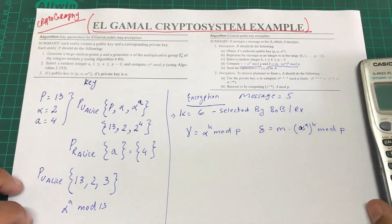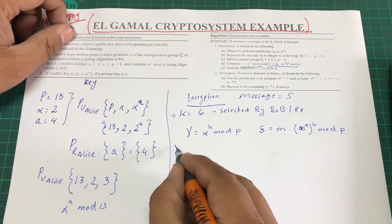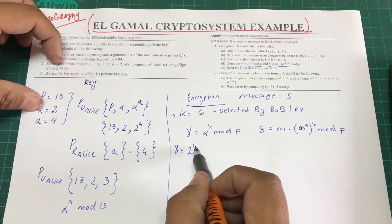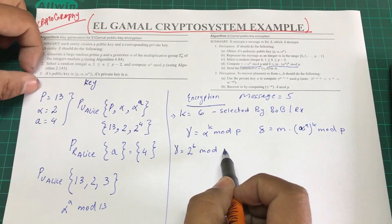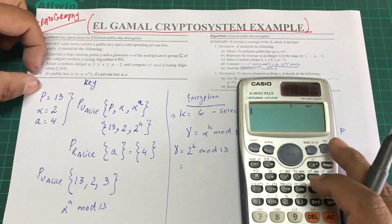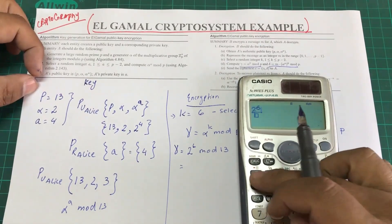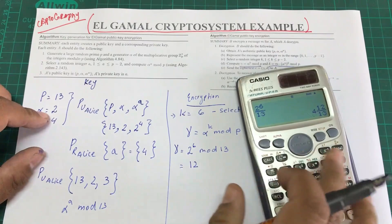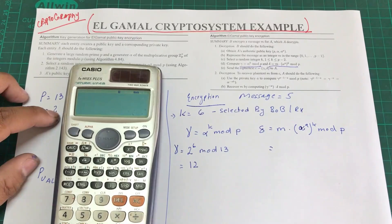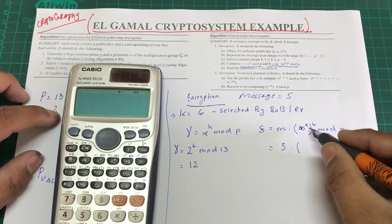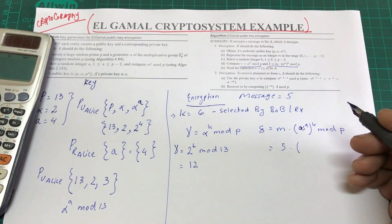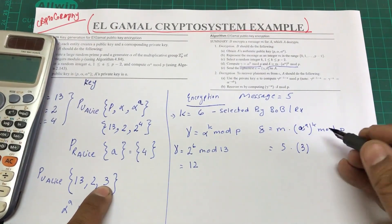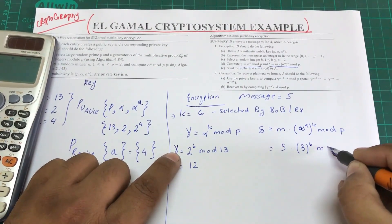Let's calculate γ first. We know α = 2, k = 6, p = 13. So γ = 2^6 mod 13. Using the calculator, 2 raised to 6 mod 13 = 12. So γ = 12. Now for δ: the message is 5, α^a = 3 (already calculated from the public parameter), k = 6, so δ = 5 × 3^6 mod 13.